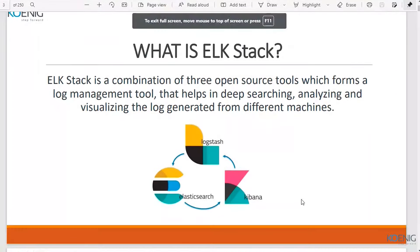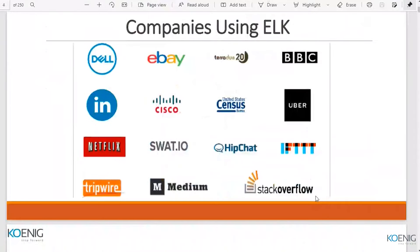Many large companies are using ELK, like Dell, LinkedIn, Cisco, Netflix, and Medium. If these big organizations use Elasticsearch for their data processing, we can too. Another major reason why Elasticsearch is very famous is that it's a free and open source tool. Anyone can download it and start working on it.